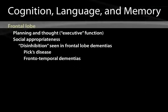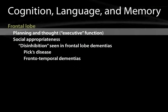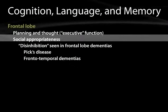The frontal lobe is very important for planning and thought — what we call executive function: the ability to integrate multiple different functions to solve a problem. This is the area of the brain most developed in humans compared to other animals, allowing us to put together all our cognitive faculties to decide how to solve a problem.